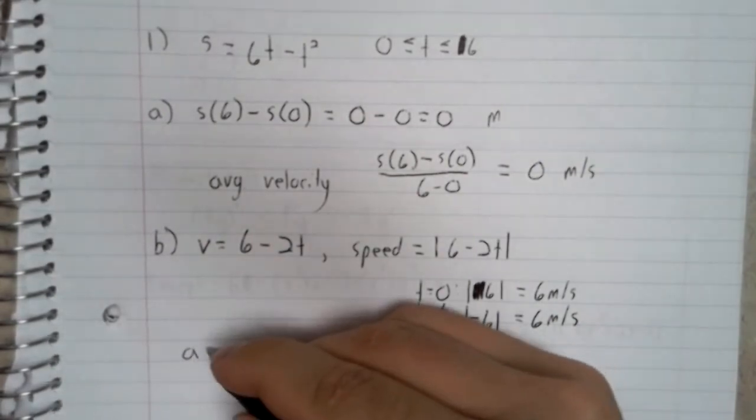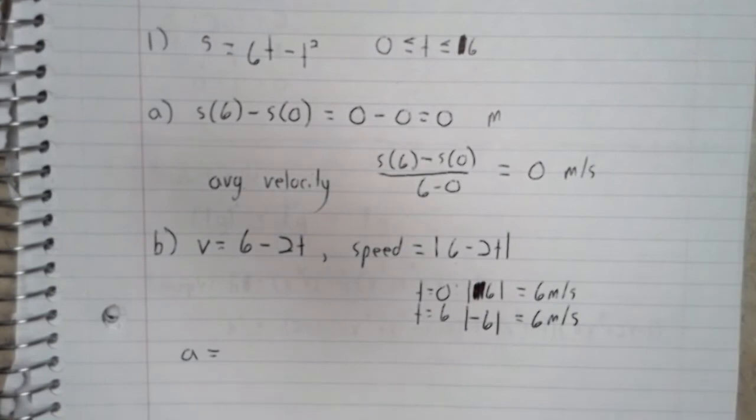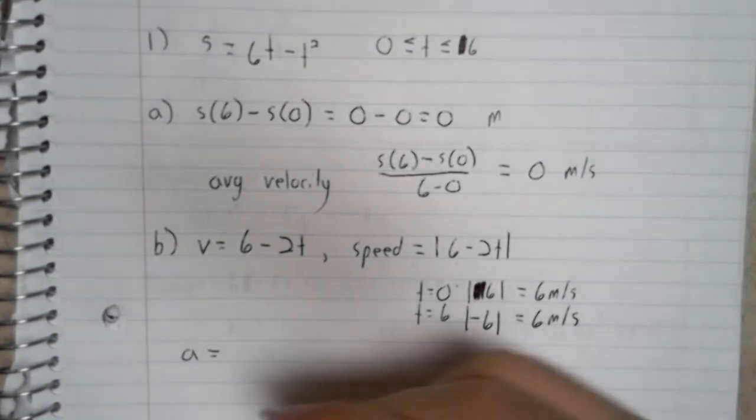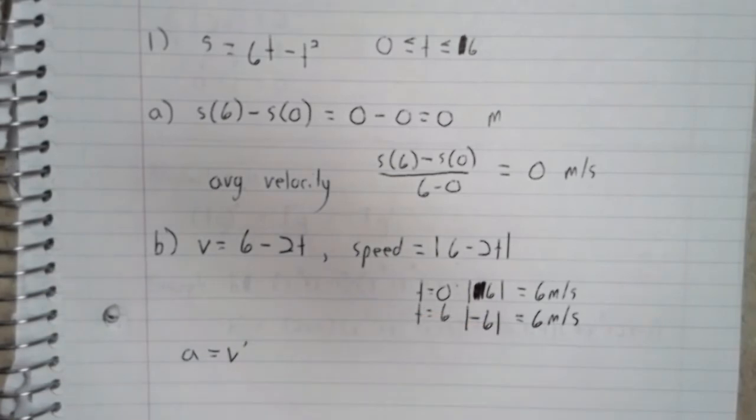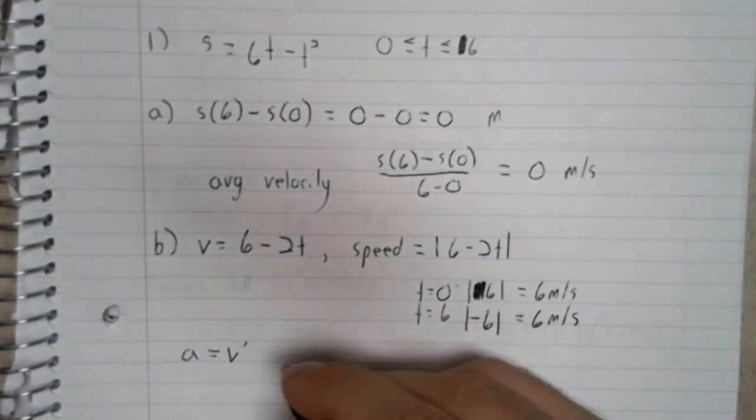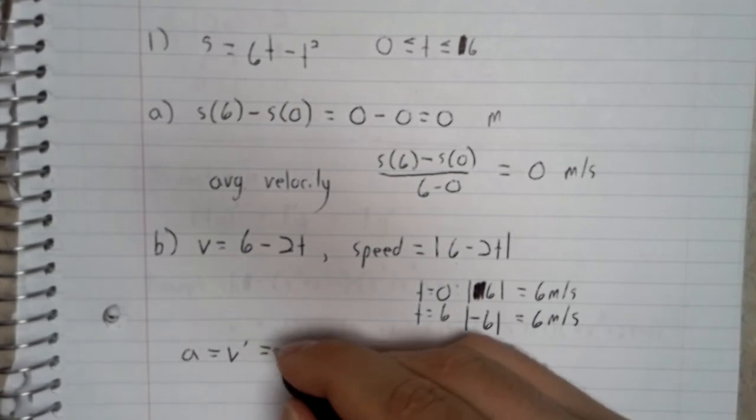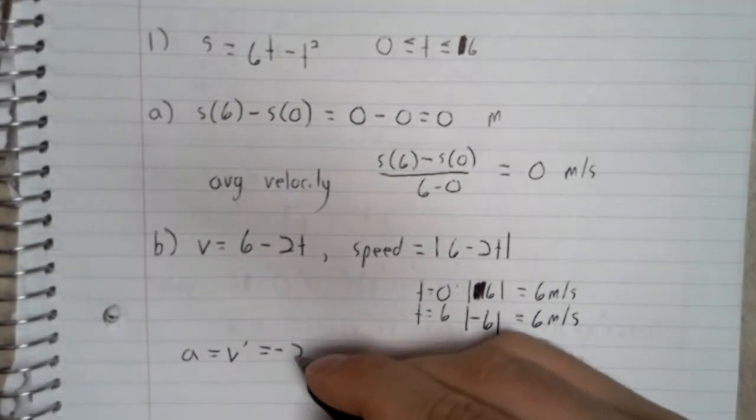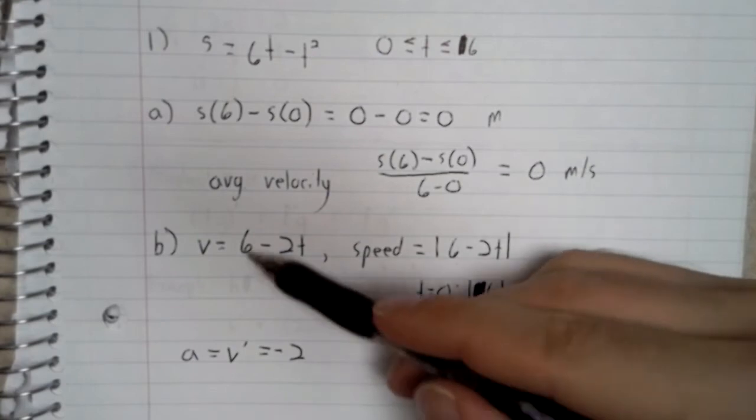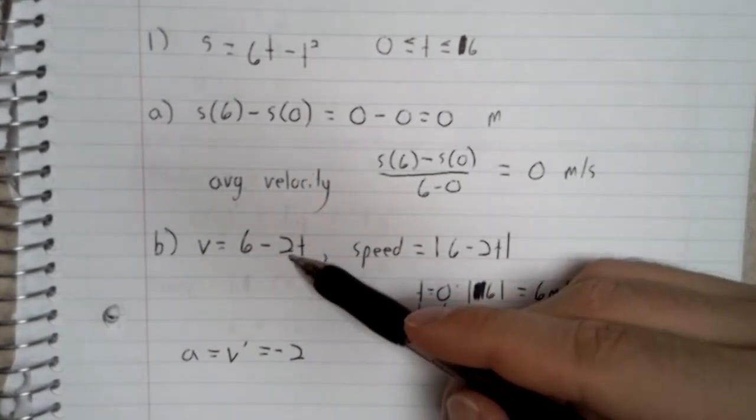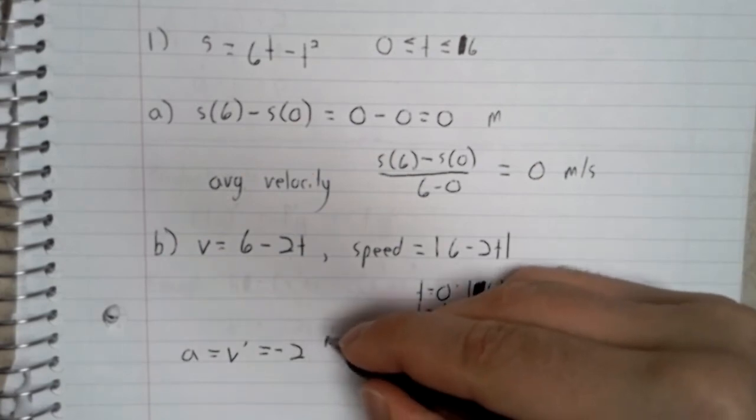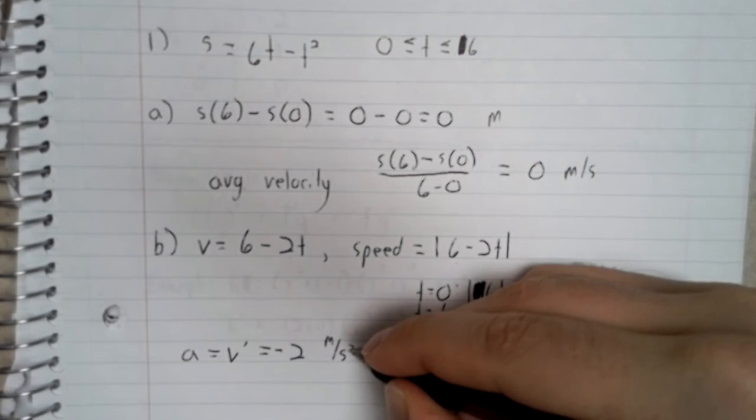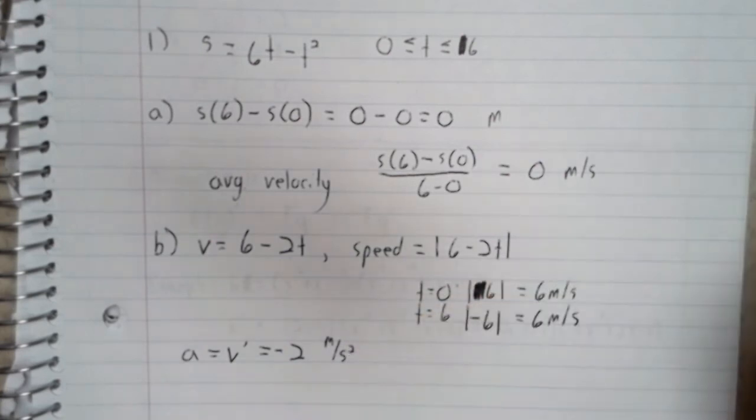The acceleration. It asks us for the acceleration at the end points. Well, the acceleration is the derivative of the velocity. So 6 turns to 0, negative 2t turns to negative 2.